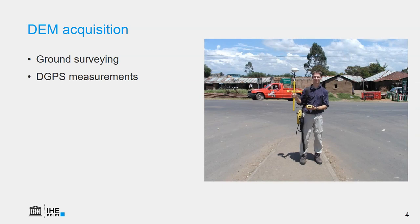A more digital way is using a differential GPS, where we use satellite information to determine our position very accurately in combination with a base station. In this way, we can get centimeter accuracy. But still, the points need to be surveyed, and it's a lot of work to interpolate these points to a continuous raster to be used in modeling.